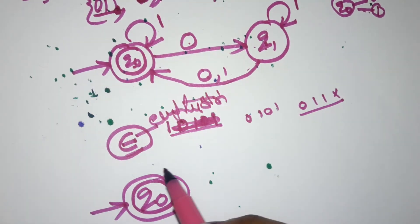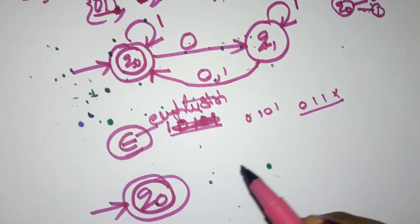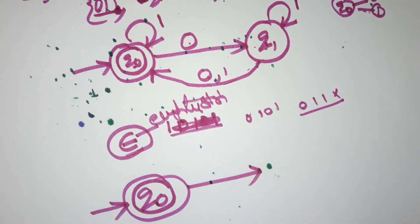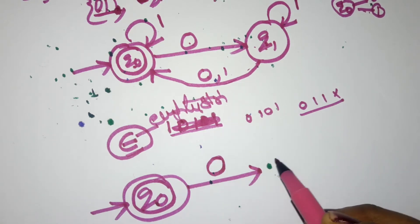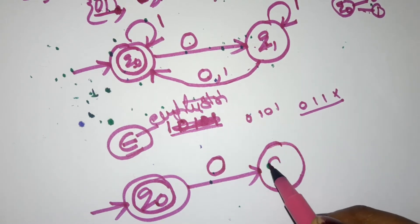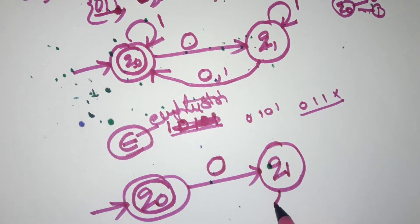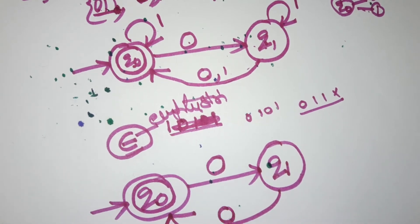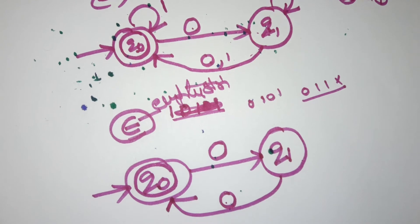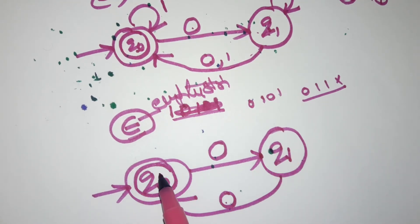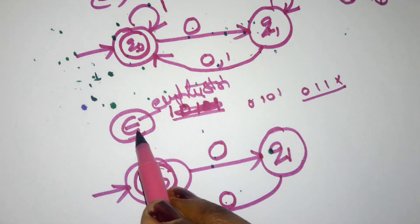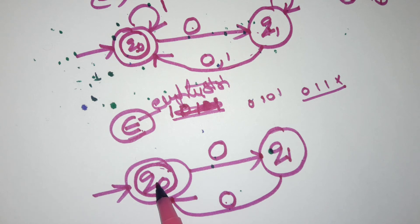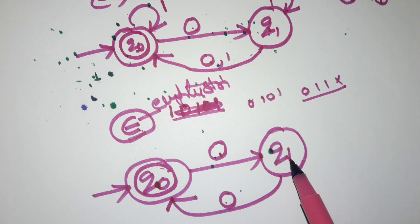If one zero appears as input, I go to state q1. When one more zero appears — making two zeros total — I go back to the final state q0. This is the minimum acceptable path: with no input it stays final, then on one zero it goes to q1, and on another zero it returns to q0.